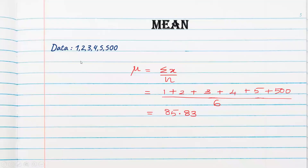Let us solve another problem: 1, 2, 3, 4, 5, 500. Let us calculate the mean again. Sum of all the observations — 1+2+3+4+5+500 — divided by 6. When you add it: 505, 509, 512, 514, 515 divided by 6. You will be getting 85.83.